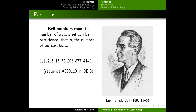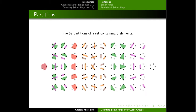The first couple terms in the sequence are given right here. These Bell numbers are named after Eric Bell, whose picture you can see on the screen. To give you a visualization of what this means, consider a set of five elements.